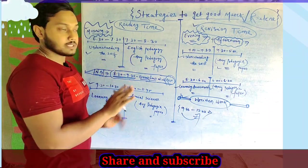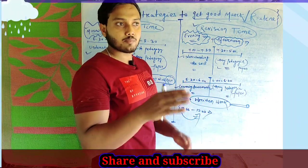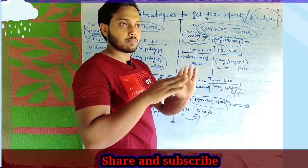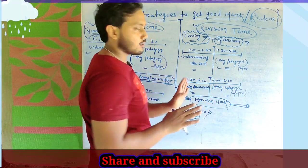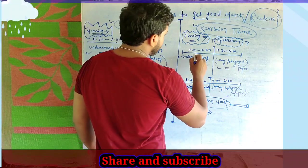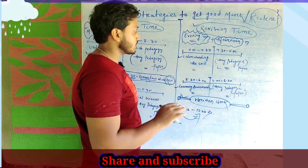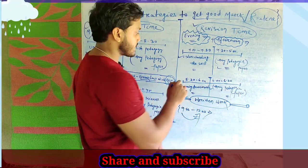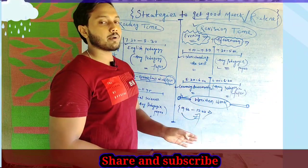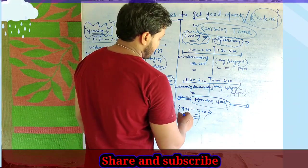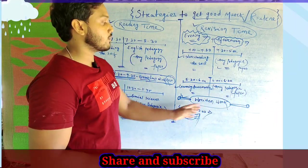Next, we can revise using memory recall and remembrance power. After 4 to 5, we can revise. From 4 to 5, understand the self and revise pedagogy papers. After 5 to 6, do Learning Assessment. The pedagogy paper theories can be covered. Finally, do the practical assignments.